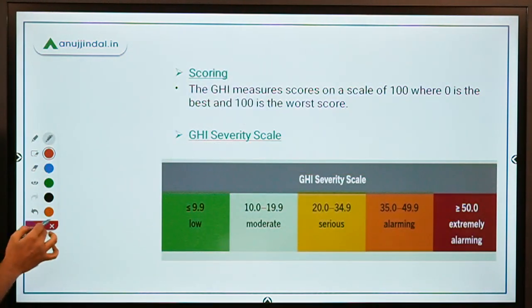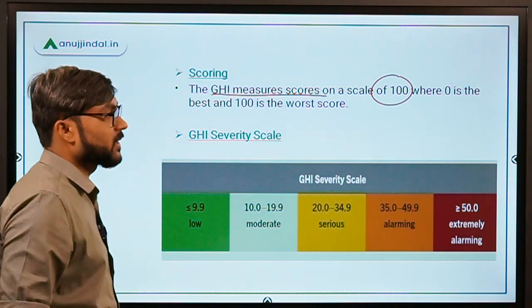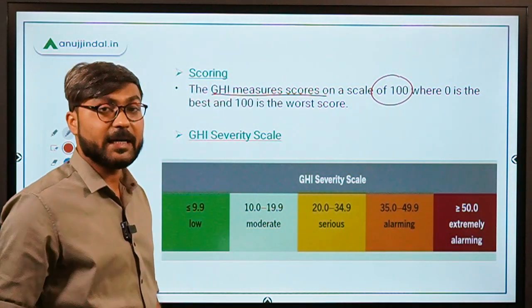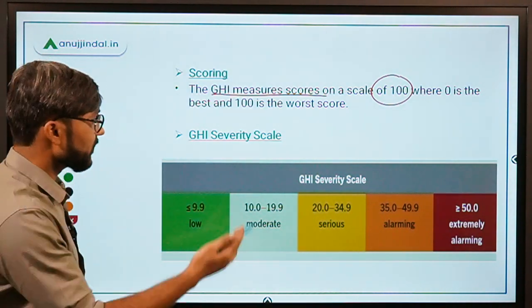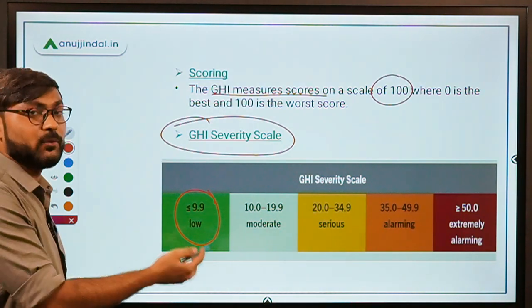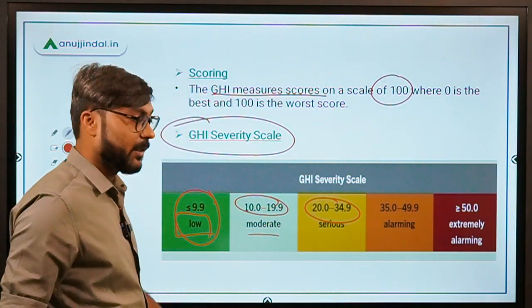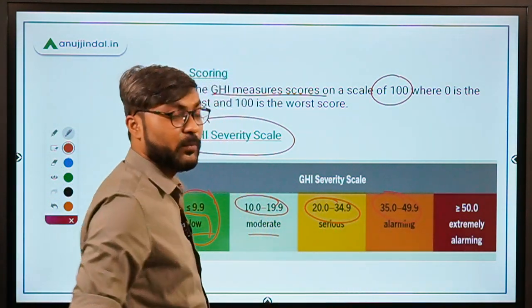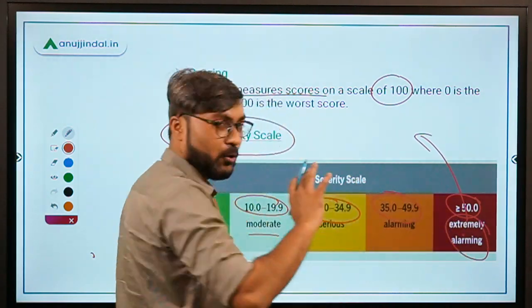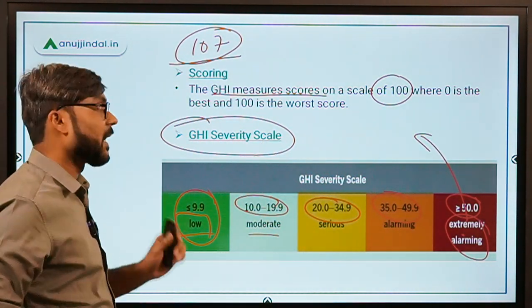The Global Hunger Index is scored on a scale of 100, where 0 is the best score and 100 is the worst. If the GHI score is less than or equal to 9.9, hunger severity is low. Between 10 and 19.9 it is moderate. Between 20 and 34.9 it is serious. Between 35 and 49.9 it is alarming. And above 50 it is extremely alarming. In total, 107 countries are covered in this index, and no country falls in the extremely alarming category.